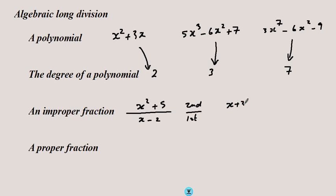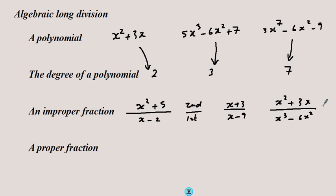Consider x plus 3 divided by x minus 9 — this is also improper because the highest power of x, which is 1 in the numerator, is the same as the power of x in the denominator. But x squared plus 3x divided by x cubed minus 6x squared is a proper fraction because the degree of x in the numerator is less than the degree of x in the denominator. So that defines what an improper fraction and a proper fraction are.